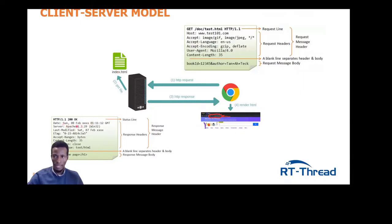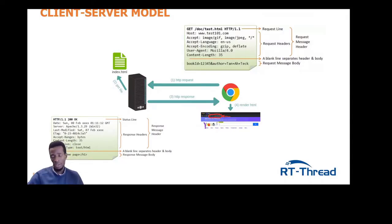The server sends back a response. The response header contains the HTTP version, a response status code, and a status message. Status codes starting with 100 are informational; 200 means success; 300 means redirection to another website; 400 means client error codes — for example, 404 meaning the requested page is not found; and 500 means the server is having issues, such as being down.